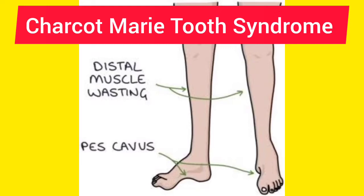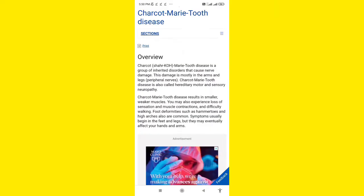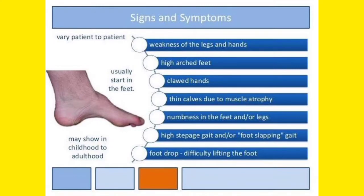Today in this video I will discuss Charcot-Marie-Tooth syndrome. Looking at the picture, you can see how distal muscle wasting has taken place — this is Charcot-Marie-Tooth syndrome. Charcot-Marie-Tooth disease is a group of inherited diseases causing nerve damage, and this damage mostly occurs in the peripheral nerves of the arms and legs.